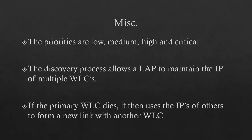The priorities are low, medium, high, and critical. The discovery process allows a lightweight access point to maintain the IP addresses of multiple wireless LAN controllers — every controller that responds when it starts up is recorded so that if a primary dies, it knows where else to go. Because it forms CAPWAP tunnels to all the controllers by default, it would automatically make the switch, and typically the user wouldn't even notice that something died.